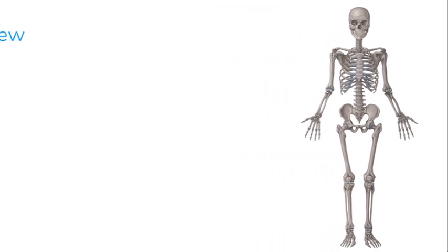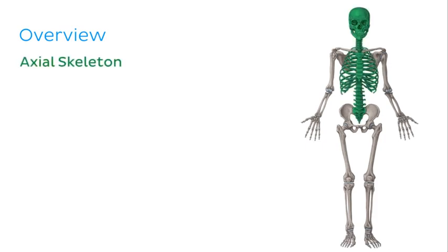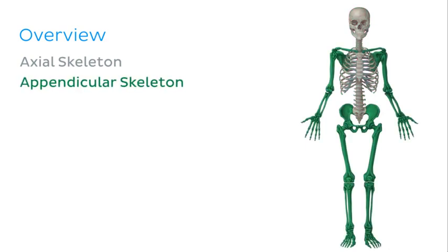The first important fact to establish is that the skeleton can be divided into two main parts: the axial skeleton, which is essentially the core central region of the skeleton, and the appendicular skeleton, which consists of the bones attached to this region or the appendages.